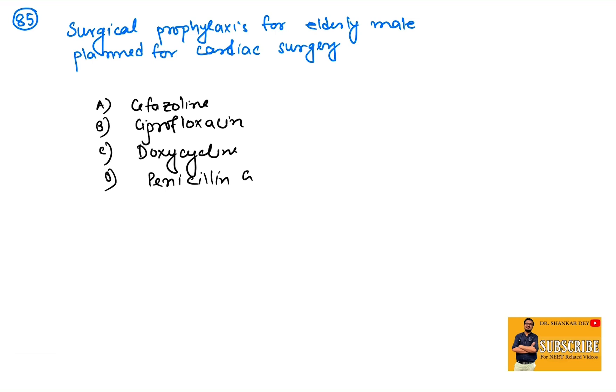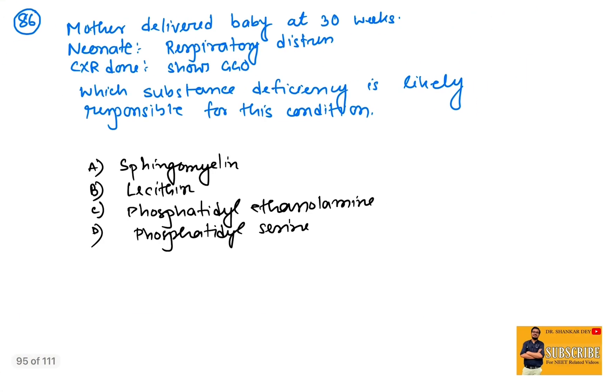Coming to question number 85: surgical prophylaxis for elderly male planned for cardiac surgery—answer is cefazolin. Cefazolin, common question. Question number 86: mother delivered a baby at 30 weeks, premature neonate with respiratory distress with bilateral ground glass opacity on x-ray. Which substance deficiency causes this symptom? This is a typical case of respiratory distress syndrome of newborn or hyaline membrane disease, and the surfactant deficiency that causes it is lecithin. Lecithin surfactant deficiency is responsible for this.